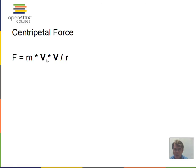If mass and radius are constant but we double the velocity, that requires four times as much force. If we triple the velocity, it requires nine times as much force — this is a v² relationship. If we have four times the velocity, it's a factor of sixteen, because 4v times 4v gives sixteen compared to 1v times 1v.